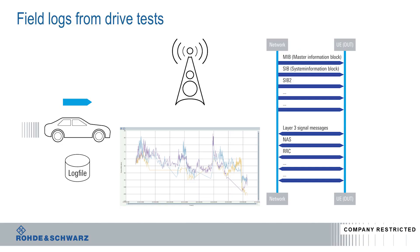A drive test records field logs that collect cellular information, RF channel conditions, and over-the-air messages exchanged between the network and the device. If issues seen in the field log can be reproduced in lab using Rohde & Schwarz's CMW500 mobile radio tester, then additional drive tests done to verify fixes in devices can be avoided.